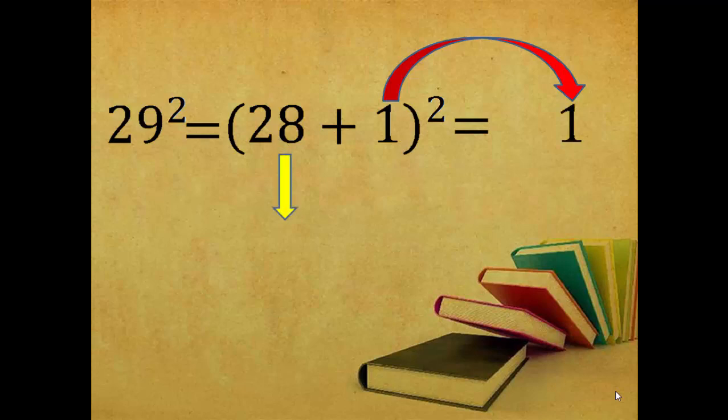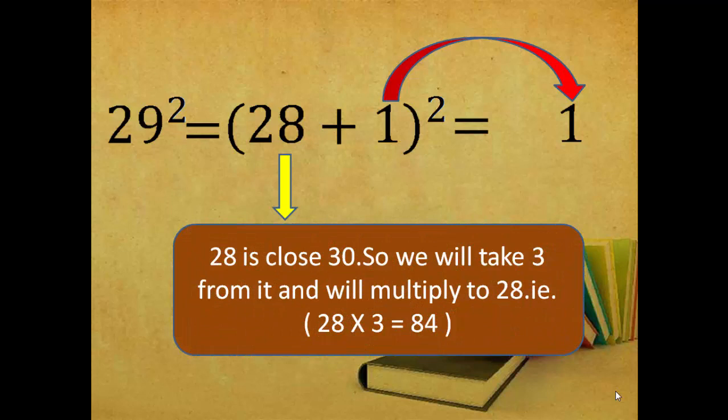Now again, we have to do some calculation. That is, 28 is very close to 30. So we will take 3 from it and we will multiply to 28 again. That is, 28 into 3 is equal to 84.